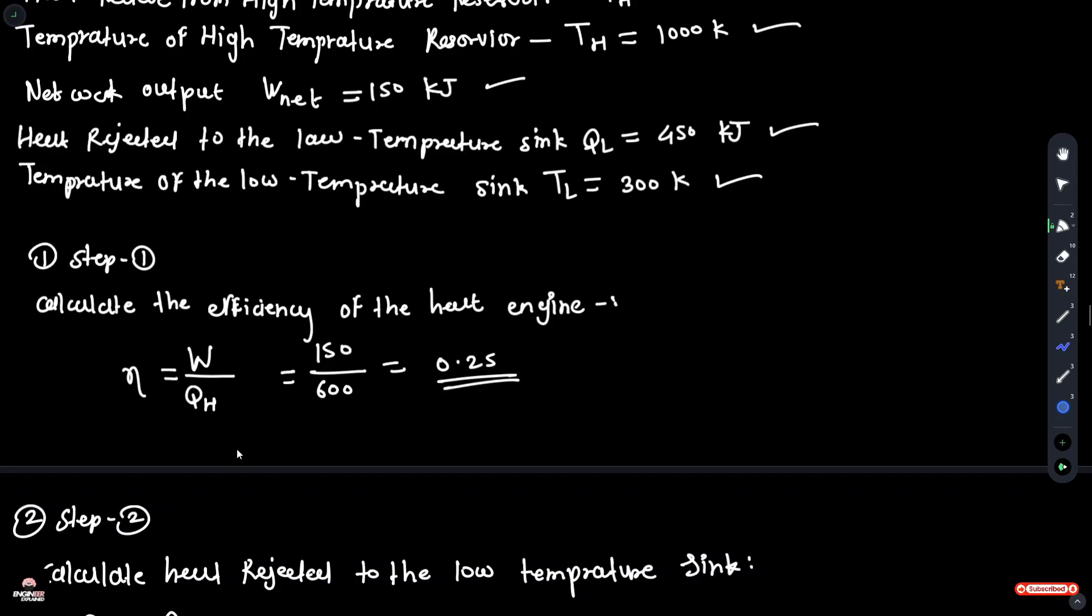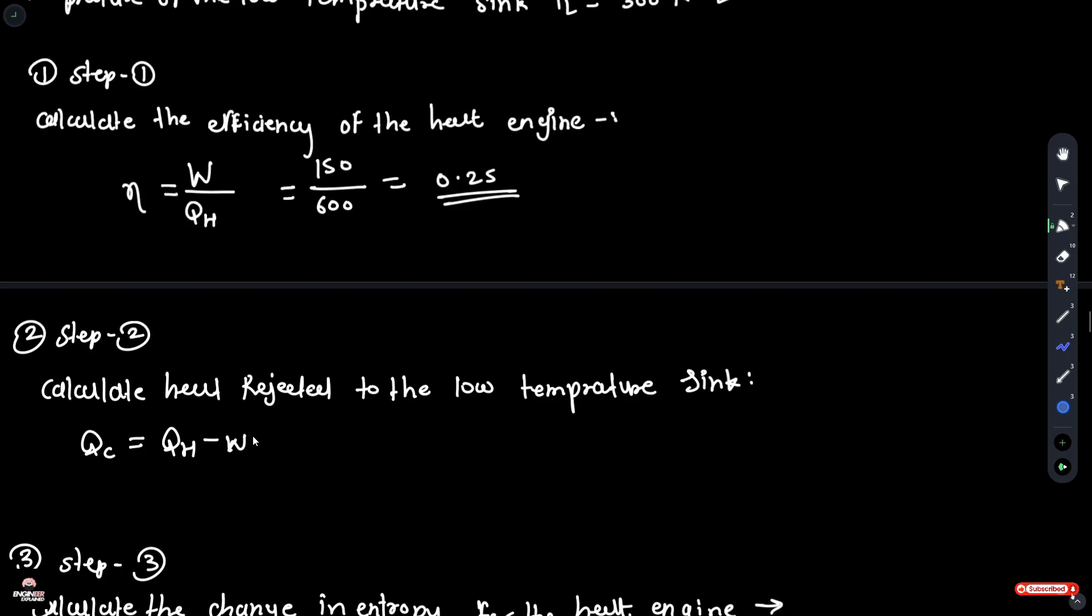Next, calculate the heat rejected to the low temperature sink. QC is equal to QH minus W, which is equal to 600 minus 150, equal to 450 kJ.